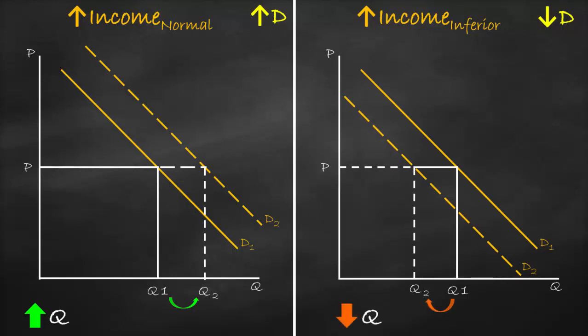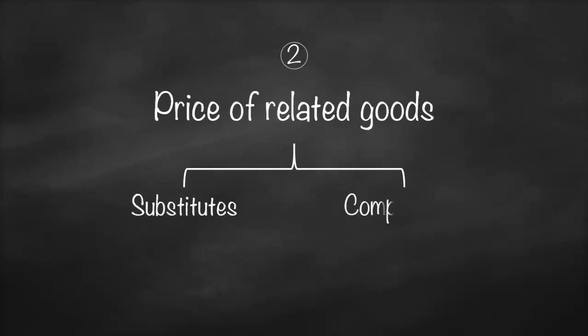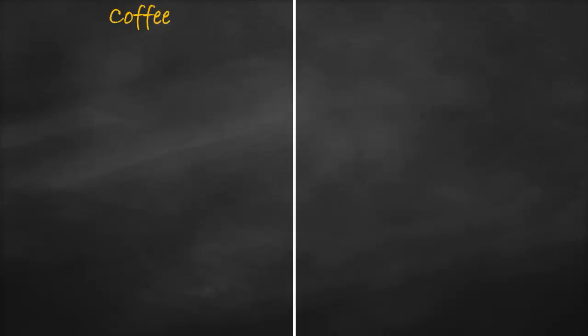Another factor that shifts the demand curve is the price of related goods. We need to differentiate between substitutes and complements. A substitute means one good can replace another, such as coffee versus tea. A complement means if you consume one good you must consume the other, such as coffee with milk for cappuccino. Remember, the price of other goods results in a shift; the price of the same good results in a movement.